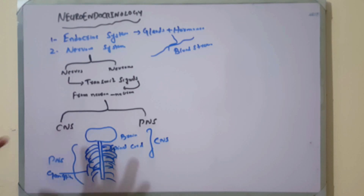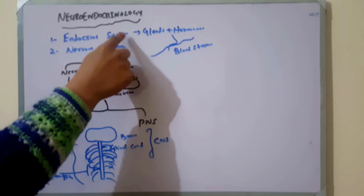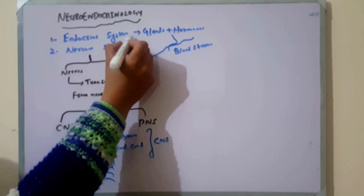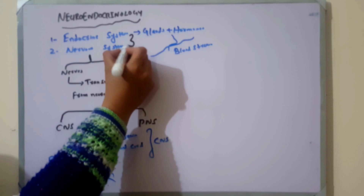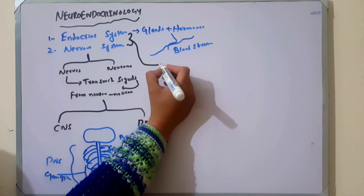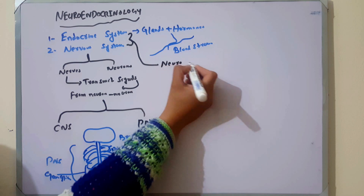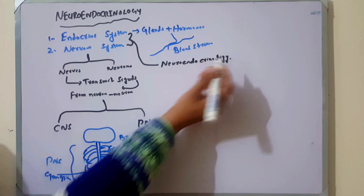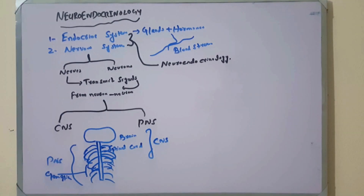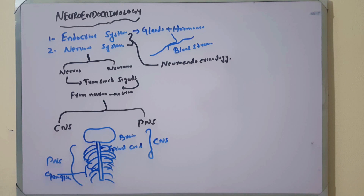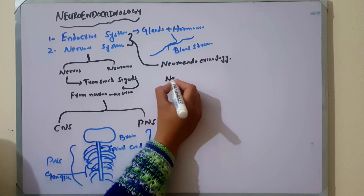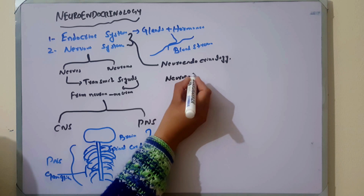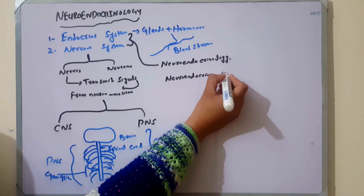The interaction between the Endocrine system and the Nervous system is called Neuroendocrinology. Neuroendocrinology is the branch of biology in which the nervous system and endocrine system act together through a process called neuroendocrine integration.